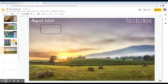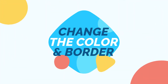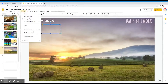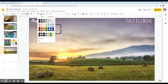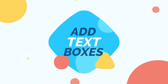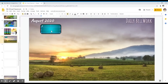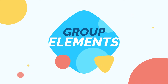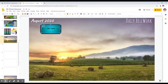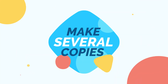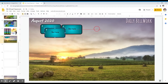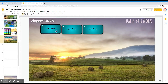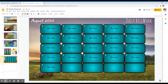After inserting a shape that will represent our box, we will have to change the color and the border of our box. Then we will continue adding text boxes. I will group the elements of these text boxes, then I will make several copies of this text box.